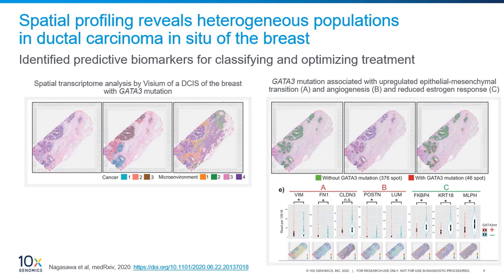Visium spatial transcriptomics and single-cell DNA sequencing further revealed that GATA3 dysfunction but not PIK3CA mutation upregulates EMT, invasion, and angiogenic pathways, followed by progesterone receptor downregulation. These results reveal the existence of heterogeneous populations of DCIS and provide predictive markers for classifying DCIS and optimizing treatment.